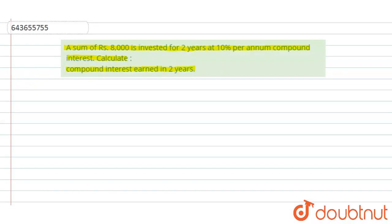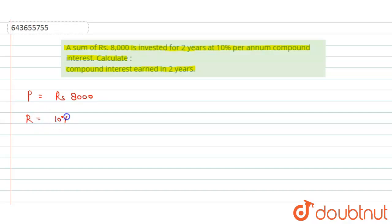First of all we will write the given conditions. Principal is equal to rupees 8000, rate of interest is equal to 10% per annum, and the value of n — that is the number of times the amount is compounded — is equal to 2.